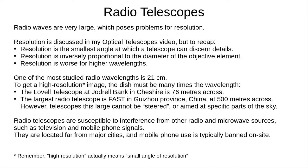The famous Lovell Telescope at Jodrell Bank, Cheshire, is 76 metres across, and the largest radio telescope, FAST, in Guizhou province, China, is 500 metres across. However, very large telescopes such as FAST can't be steered or aimed at specific parts of the sky.